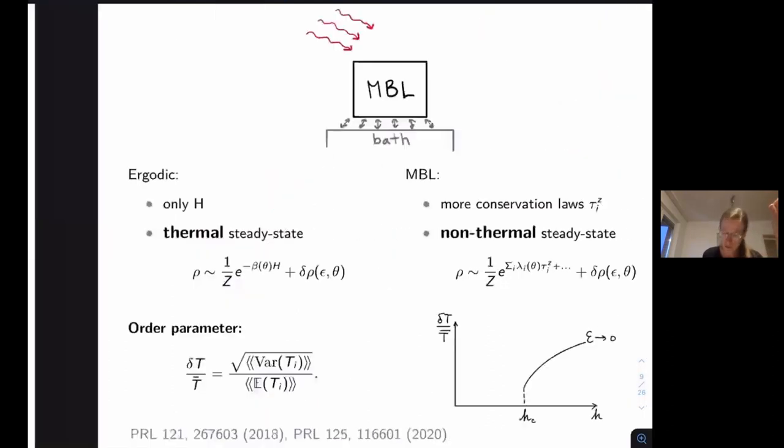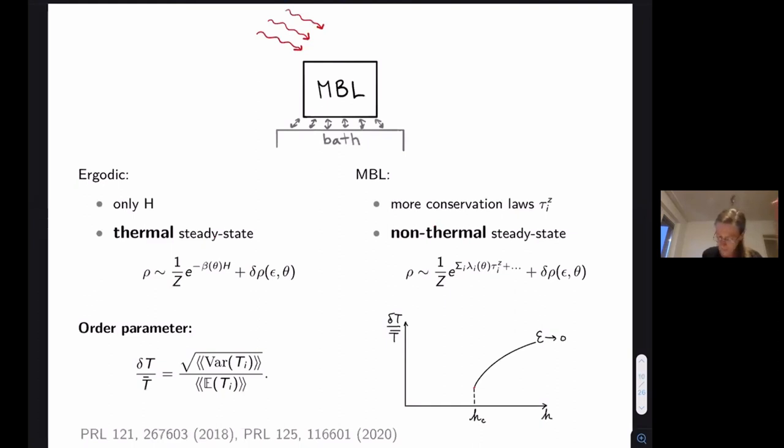Therefore, it seemed to us that the very natural way to describe or capture this phase transition is to look at the variation of these local temperatures. What we expect is that on the ergodic side, at least if we could take this coupling to the bath and driving to be infinitesimal, then on the ergodic side this variation would be zero and then of order one on the MBL side. So we would really, even though we would consider an open system, we would really still see a true phase transition.